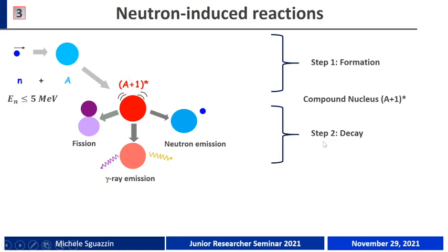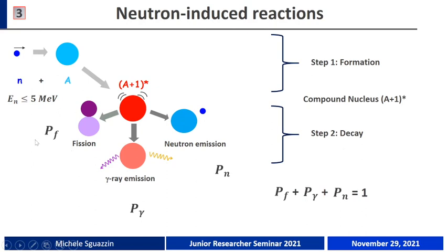After that, we have the second step, which is called decay, where this compound nucleus can decay following different channels — for example, by fissioning, emitting gamma rays, or by the emission of a neutron. Each one of these decay channels is characterized by a probability, and the sum of these probabilities must be equal to one.